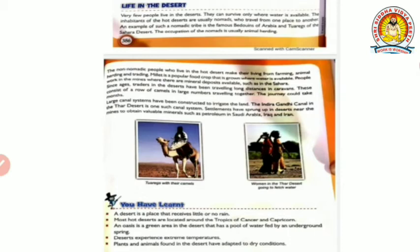Petroleum is also a mineral found in such deserts and mine work takes place there. Now, what we have learned in this chapter: a desert is a place where it receives little or no rainfall. Most hot deserts are located around the Tropic of Cancer and Capricorn. An oasis is a green area in the desert that has a pool of water fed by an underground spring, where people can actually live and work because they are near water. Deserts experience extreme temperatures and plants and animals found there have adapted to dry conditions.